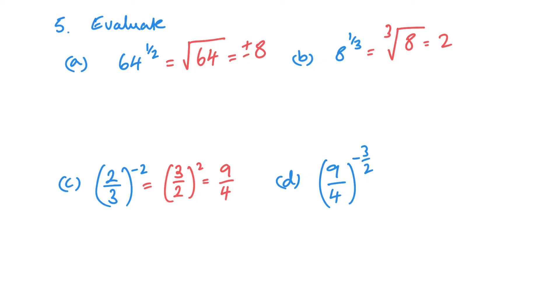Now, looking at the last one, very much the same way, we want to change it to a positive power first. So it's going to become 4 over 9 to the 3 over 2. Then what I really want to do here is square root first, then cube. Bottom of the fraction is the root, top of the fraction then covers the power. So square root first is going to be 2 over 3 cubed. So it's going to be 8 over 27.